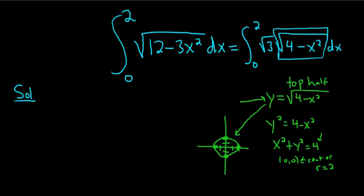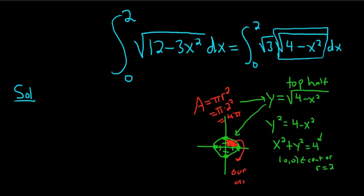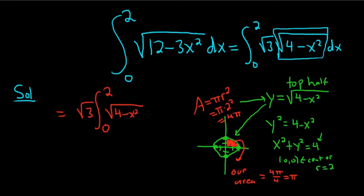And we're integrating from 0 to 2, so we're basically just integrating this piece here — we're just finding the area of this quarter circle. The area of a circle is equal to pi r squared. Here r is 2, so the area of the entire circle is pi times 2 squared, which is 4 pi. But we're integrating only a quarter area, so our area is 4 pi over 4, which is just pi. So we can pull out the square root of 3 and write this as the square root of 3 times the integral from 0 to 2 of the square root of 4 minus x squared dx.